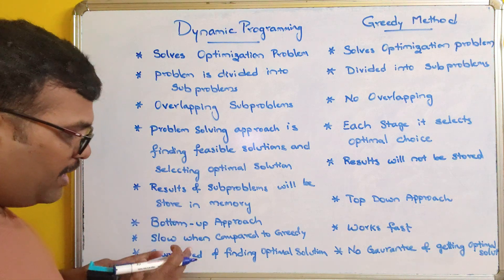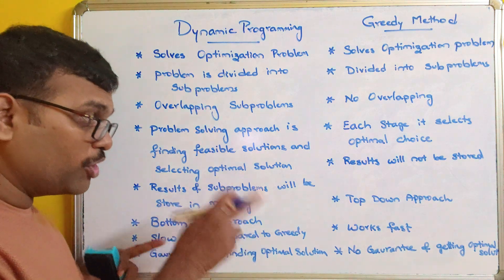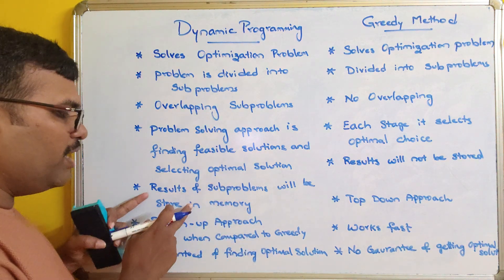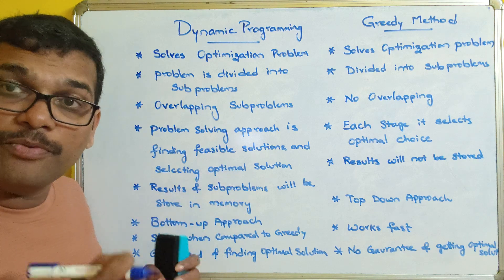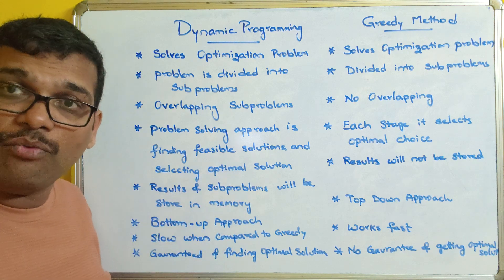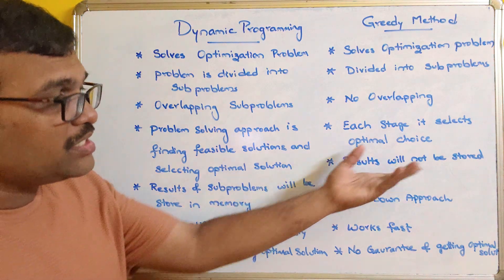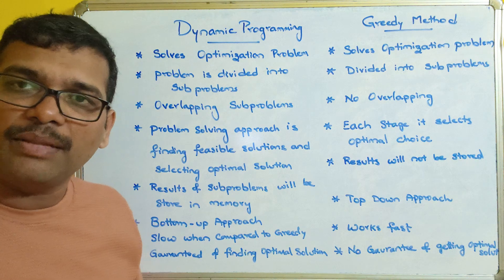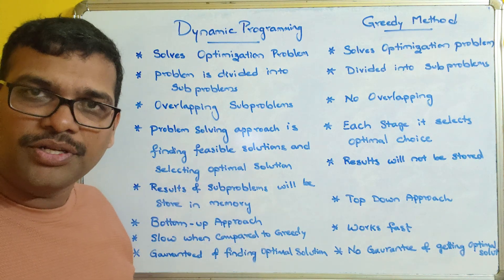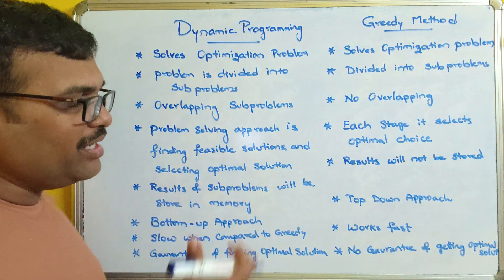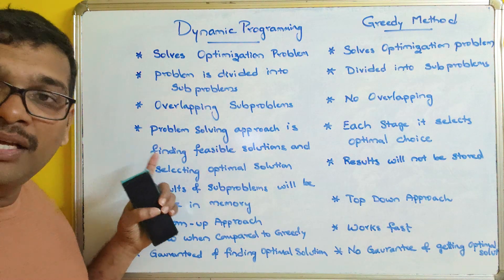Dynamic programming is a time-consuming process because we store complete results in memory, requiring memory space to store and retrieve data. In the greedy method, results are not stored in memory — there is no concept of memoization — so it works very fast, but dynamic programming works slowly.